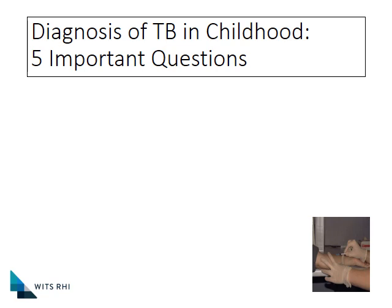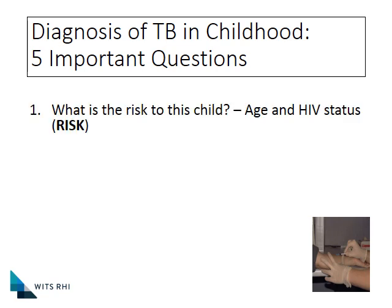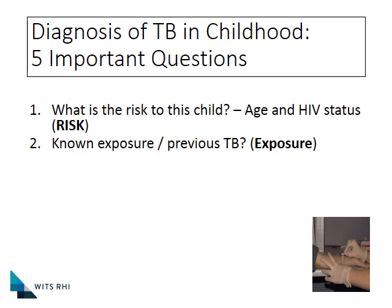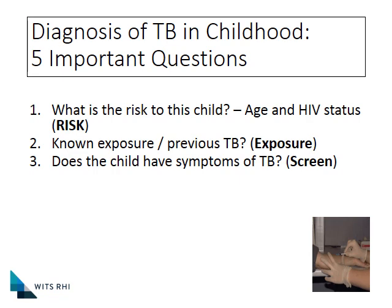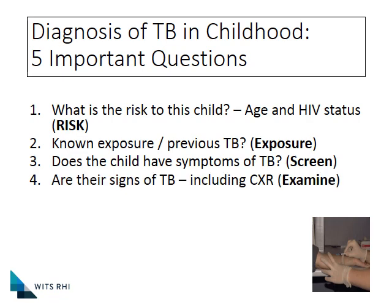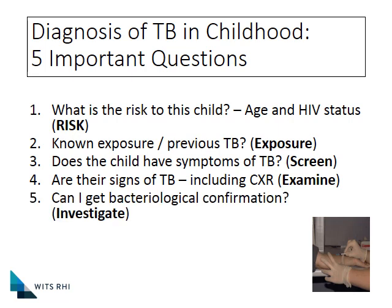I'm going to go through a very specific approach to diagnosing TB in childhood, putting together an index of suspicion for how likely it is that this child is presenting with TB. There are five important questions to ask yourself. Question one: what is the risk to this child — how likely is it that TB disease has developed? Question two: has this child had a TB contact, or is there no exposure? Question three: are there TB symptoms? Question four: can you find any signs of TB on examination and chest X-ray? And finally, if possible, try to find bacteriological confirmation through investigations.